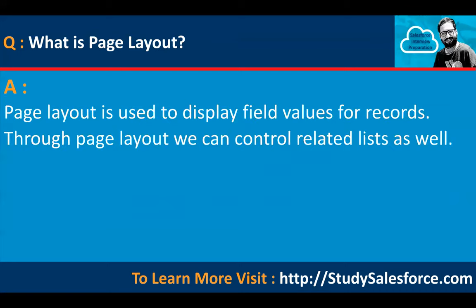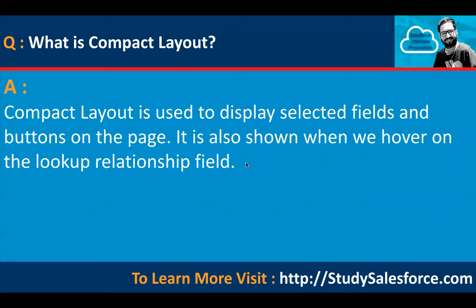What is page layout? Page layout is used to display field values for records. Through page layout we can also control related lists. What is compact layout? Compact layout is used to display selected fields and buttons on the page. It is also shown when we hover on a lookup relationship field or a master-detail relationship field.